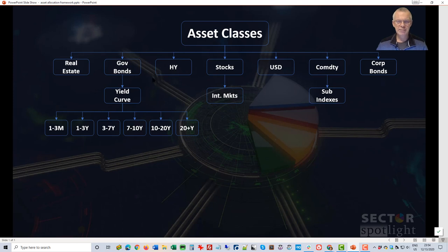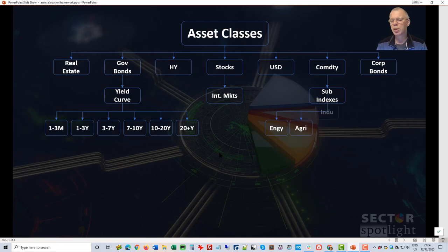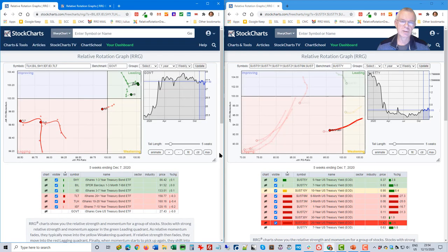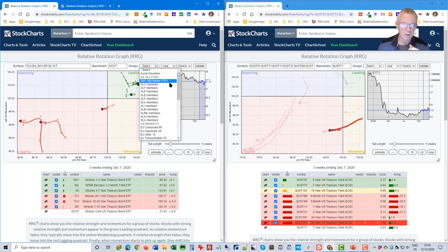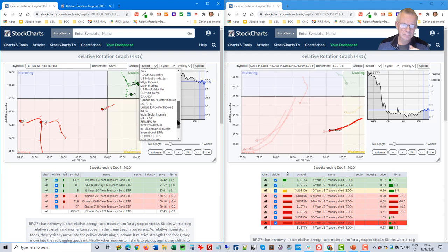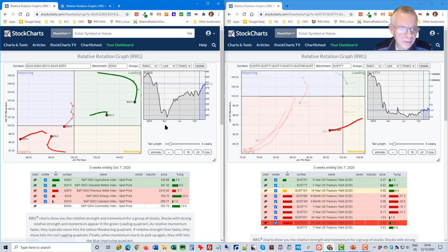So we've decided that in the yield curve we should be at the shorter end. Now let's go to the commodity section. If you want to pick up some commodities, you may want to dive into the commodity basket, and we also have that as a predefined group on the system.